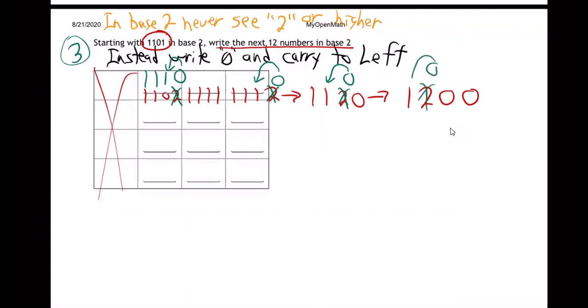So write a 0 and carry again. So it becomes 1200. But I wrote a 2 again. So do it again. Write a 0 and carry. I'm running out of room here. It becomes 2000. And again. Write a 0 and carry. And we're finally there. We end up having a new column. It's the number 10000. At least it looks like 10000. Not really 10000, but it's 10000 in base 2. That's the next number. Isn't that bizarre?